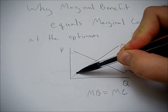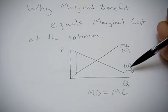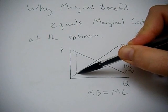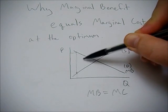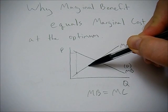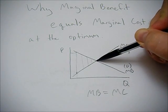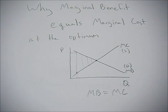This quantity amount right here shows a difference between the benefit you're receiving here and the cost you're paying to get it. As you consume more and more, the difference between the two is getting smaller until at some point they're equal to each other.